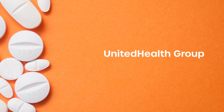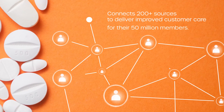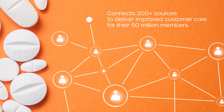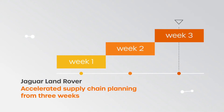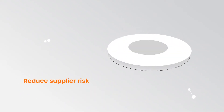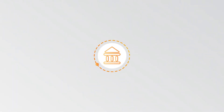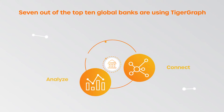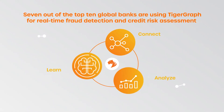UnitedHealth Group connects over 200 sources to deliver improved customer care for their 50 million members, while Jaguar Land Rover has accelerated their supply chain planning from three weeks to 45 minutes, reducing supplier risk by 35%. Seven out of the top 10 global banks are using TigerGraph for real-time fraud detection and credit risk assessment.